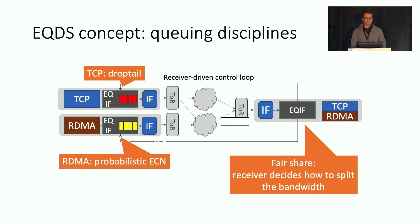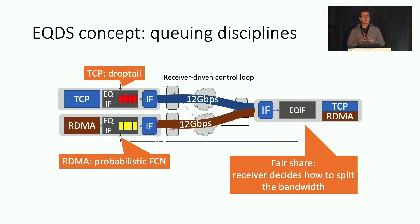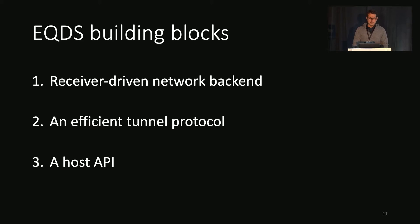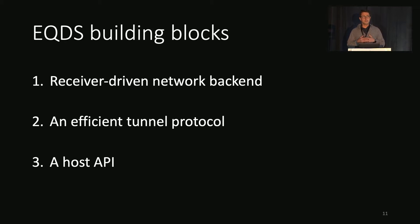By applying this, we can dictate how traffic is shared between different senders. Remember the previous example where TCP starves RDMA? With EQDS, running TCP and RDMA on top of EQDS gives you perfect sharing. So that's the overview — let's look at some details. To get EQDS working we need a backend that depends on the hardware in your network, an efficient tunnel protocol, and an efficient host API.